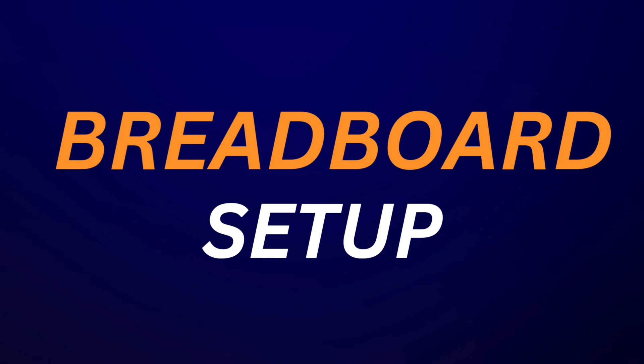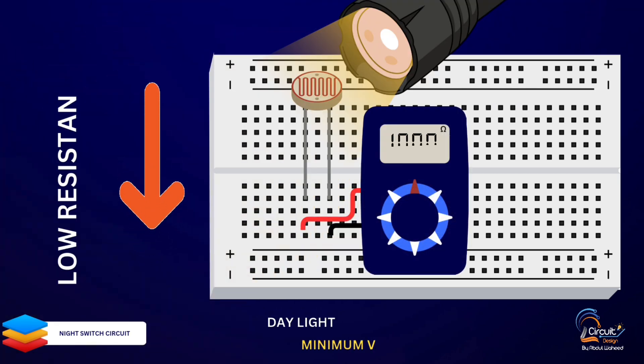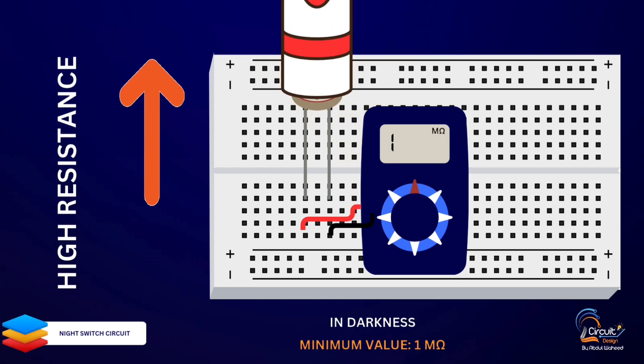Here's the circuit diagram. We'll explain each part step by step. First, place the LDR on the breadboard. The LDR's resistance changes with light intensity. In bright light, it has low resistance, and in darkness, it has high resistance.